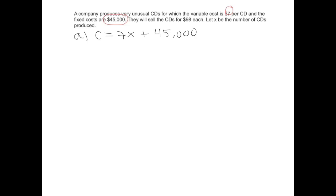So the 7 is dependent on how many CDs we produce, but the $45,000 we're always going to spend. So this is our cost equation right here. That's the answer to the first part of the question.